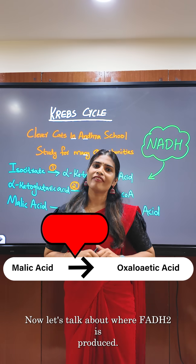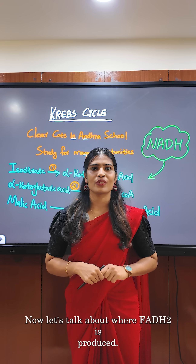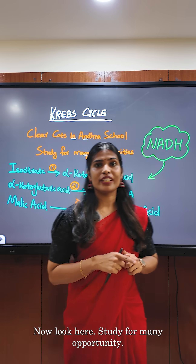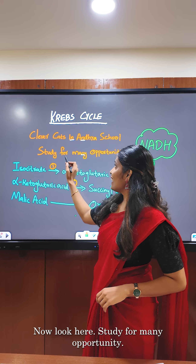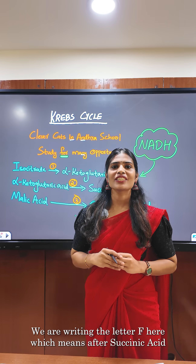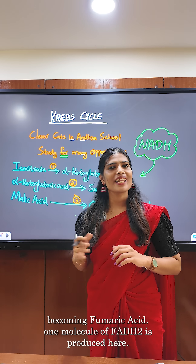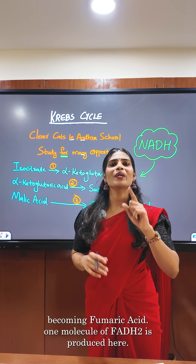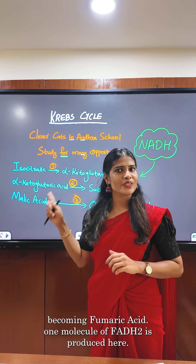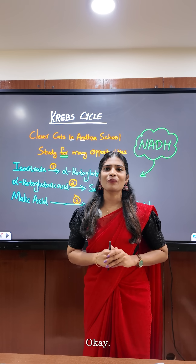Now let's talk about where FADH2 is produced. Look here at 'study for many opportunities' — we are writing the letter F here, which means after succinic acid becoming fumaric acid, one molecule of FADH2 is produced.